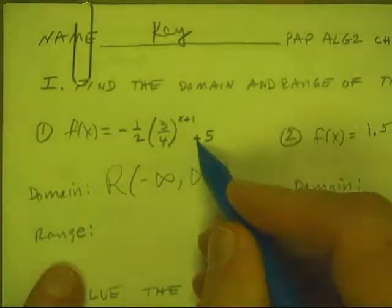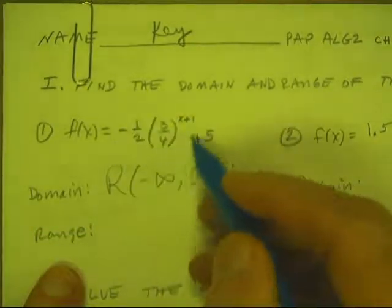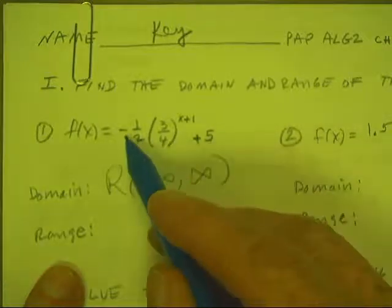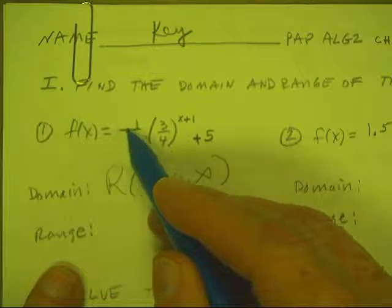And then notice this is 5. So even when that does approach 0, this is approaching 5. And everything else is going to be lower than that because of this negative.